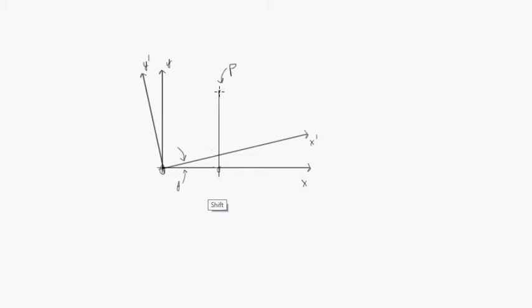And if we draw a line straight down from the point, the distance from here to here, that's our y value. It's the same as this distance from here to here.